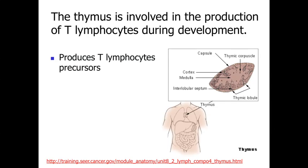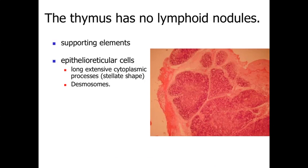The second encapsulated organ we're going to talk about within the immune system is going to be the thymus. The thymus is going to be involved with the production of T lymphocytes, primarily during early stages of development, producing T lymphocytes — the cell-mediated immunity cells. It's going to be characterized by the fact that the thymus has no lymph nodules. The lymph nodules — the circular aggregates of small lymphocytes — are going to be associated with B cells. The thymus, because it's T cells exclusively, is going to have none of these lymph nodules.